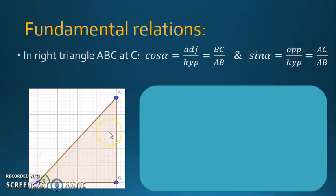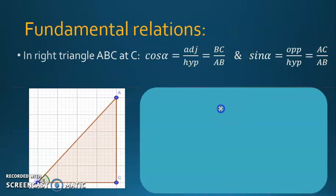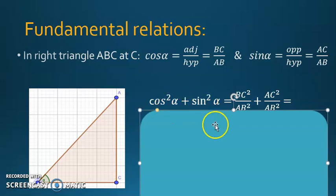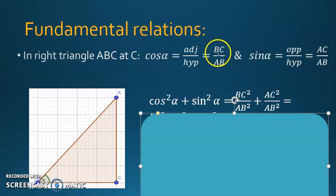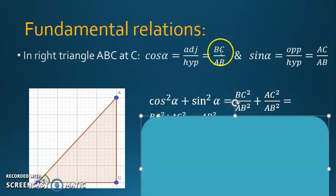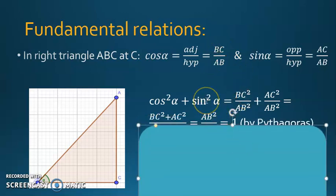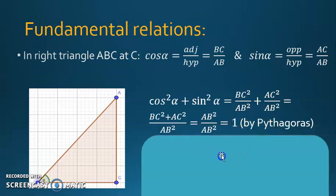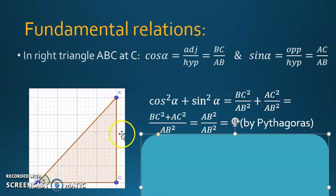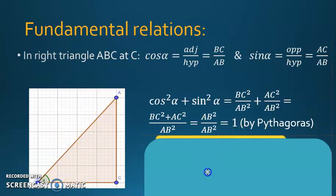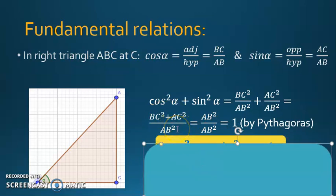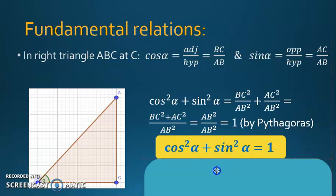Pause the video and calculate sine squared plus cosine squared. Cosine squared alpha plus sine squared alpha — replacing cosine alpha by BC/AB and sine alpha by AC/AB — gives BC squared over AB squared plus AC squared over AB squared. Since they have a common denominator, you get BC squared plus AC squared all over AB squared. By the Pythagorean theorem, BC squared plus AC squared equals AB squared, so you get AB squared over AB squared, which is 1.